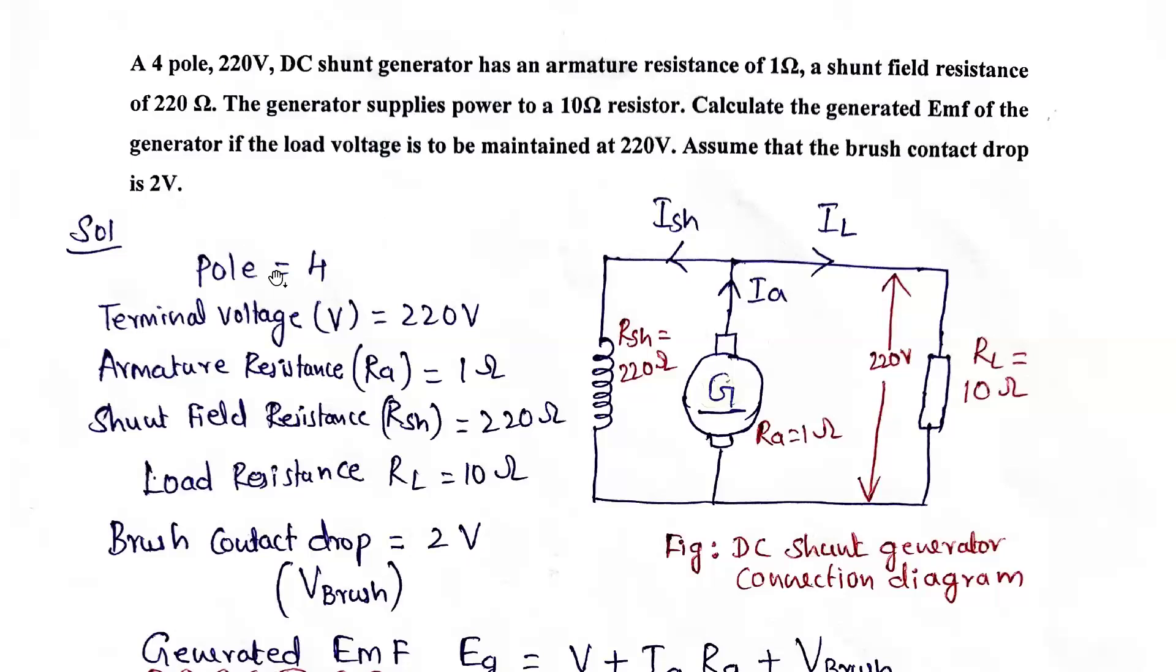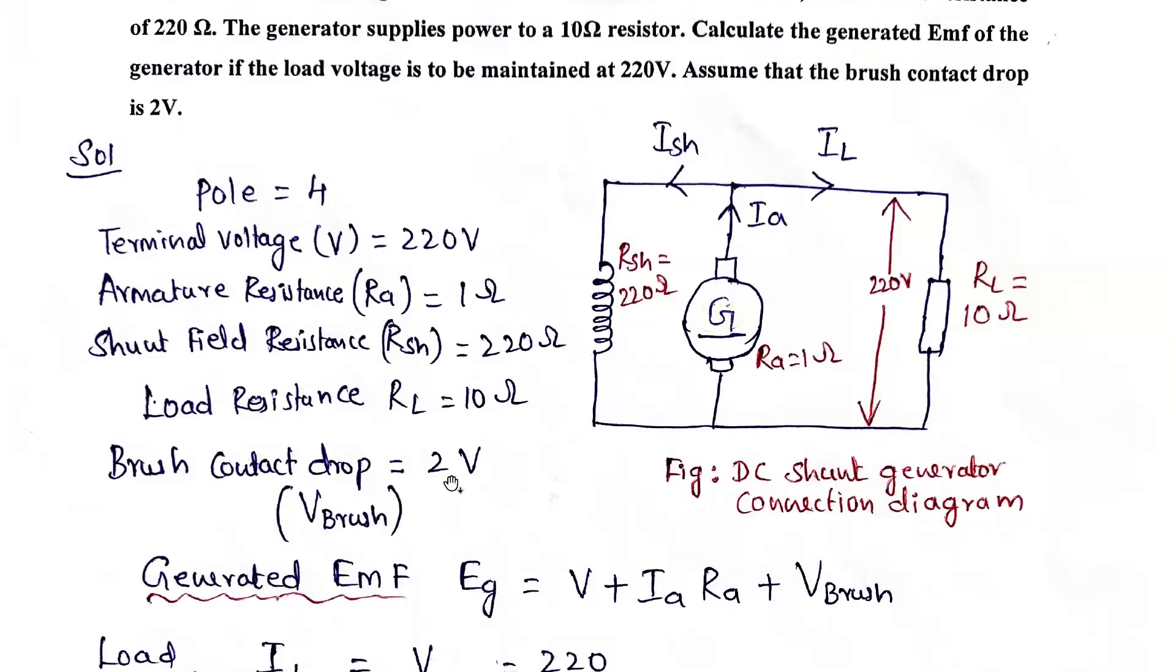From the problem: pole is 4, terminal voltage is 220 volts, armature resistance is 1 ohm, field resistance Rsh is 220 ohms, and load resistance RL is 10 ohms. Brush contact drop is also given as 2 volts.